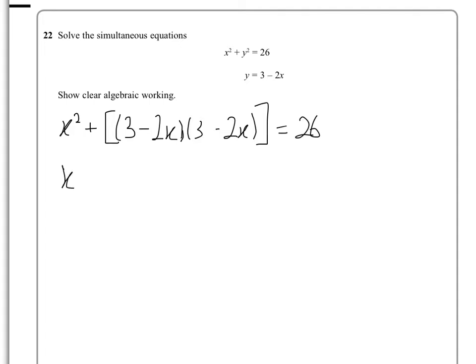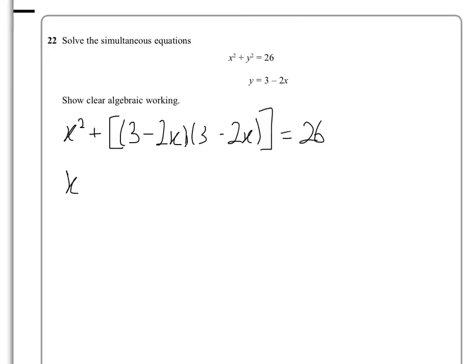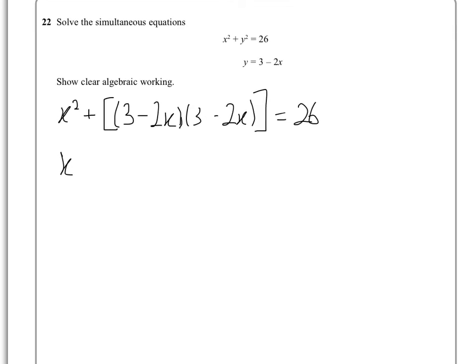we're going to get x squared plus 9 minus 12x plus 4x squared minus 26 equals 0.